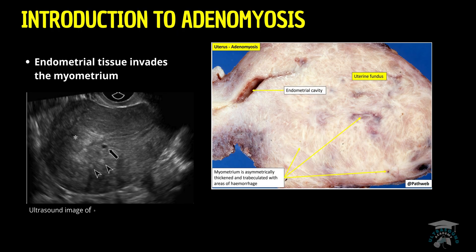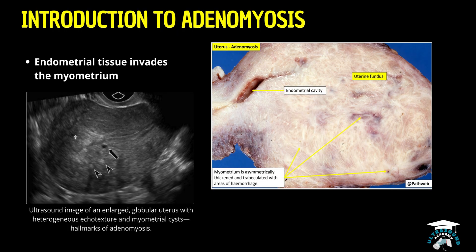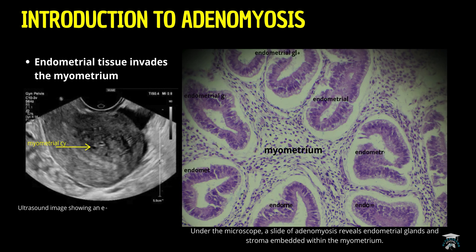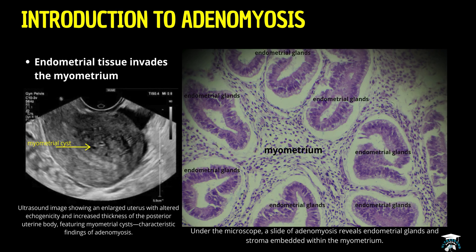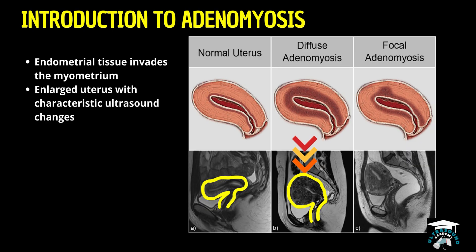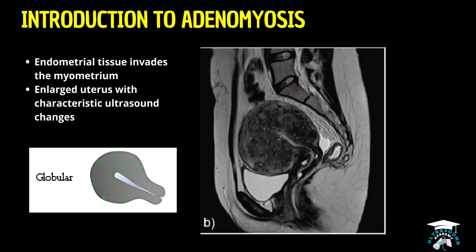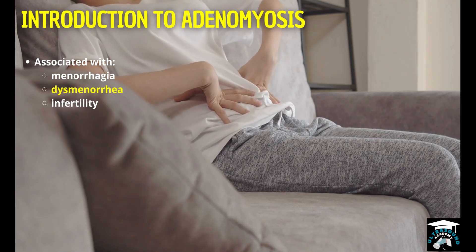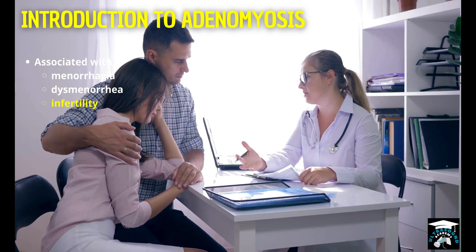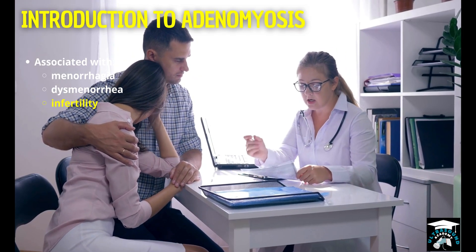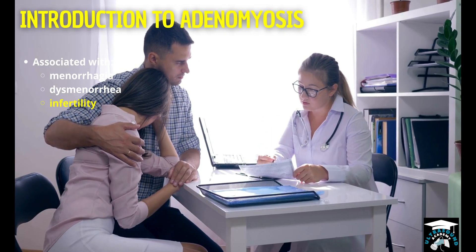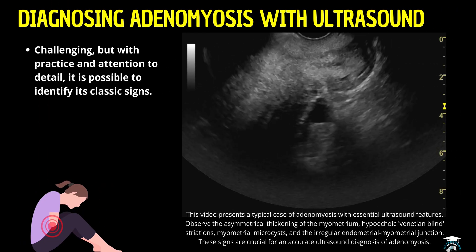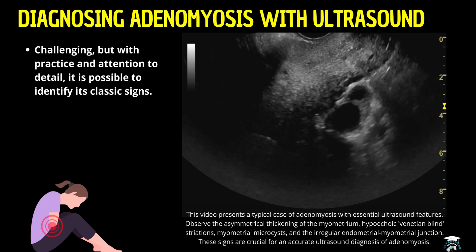What is adenomyosis? It's a condition where the endometrial tissue infiltrates the myometrium. This can make the uterus larger than normal and give it that classic globular shape we often hear about. It's closely linked to symptoms like heavy menstrual bleeding, painful periods, and even infertility. Diagnosing it with ultrasound can be tricky at first, but once you know what to look for, it gets much easier.